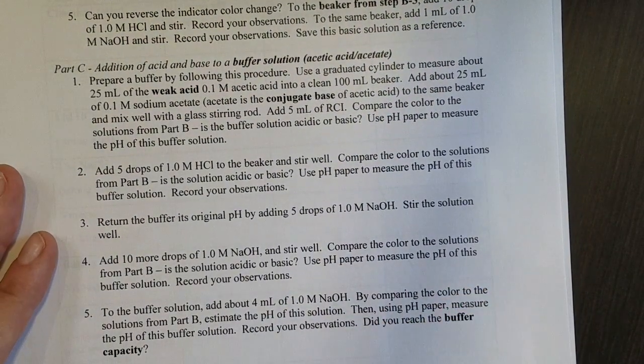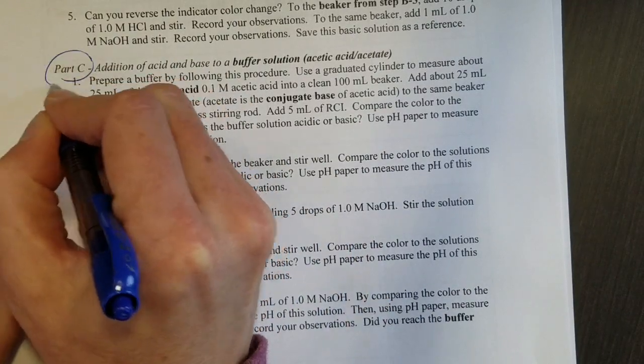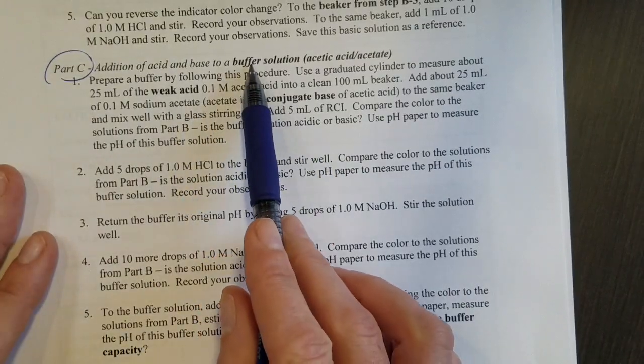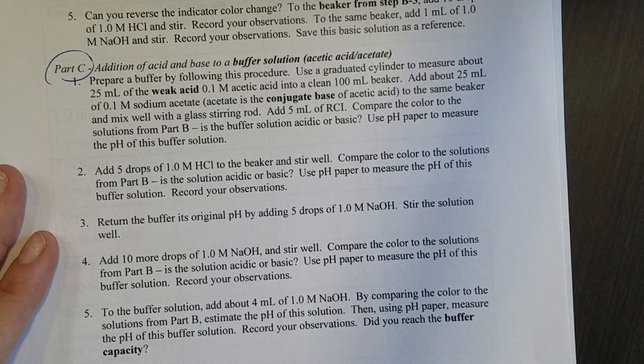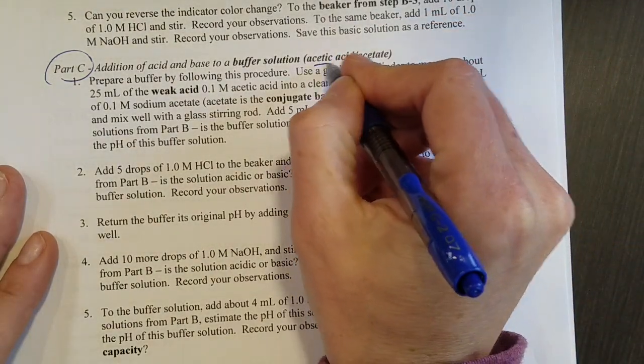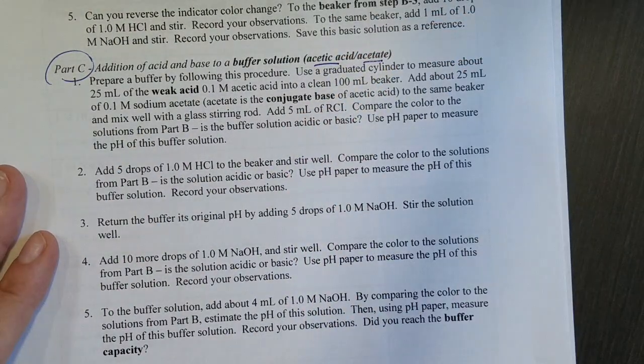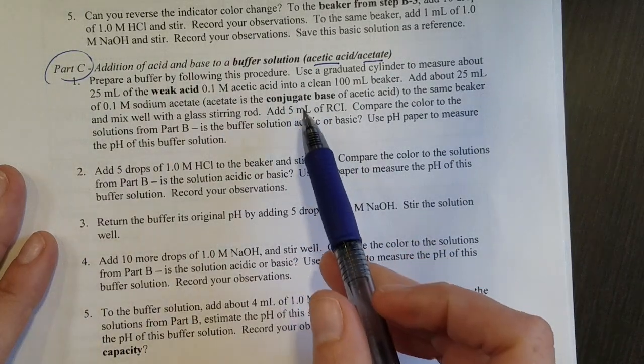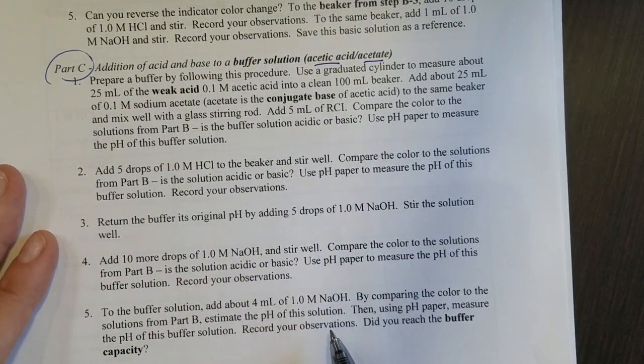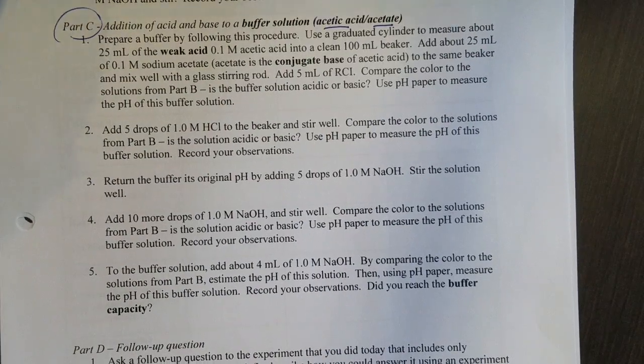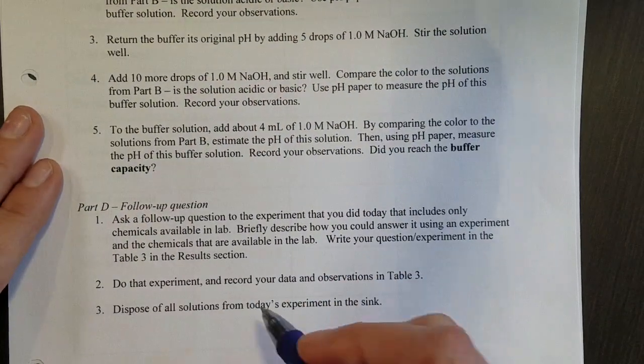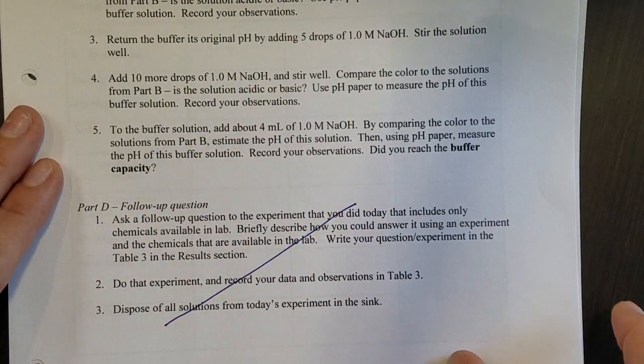And then in part C, which is where we'll spend most of our time focusing, we're going to have a buffer solution and so that's going to be some water but also with the weak acid and the conjugate base. So you'll observe all of these steps being taken and then if we look at the bottom here, normally you would design your own little experiment, but we're going to skip that today.